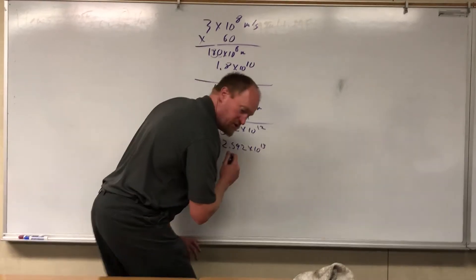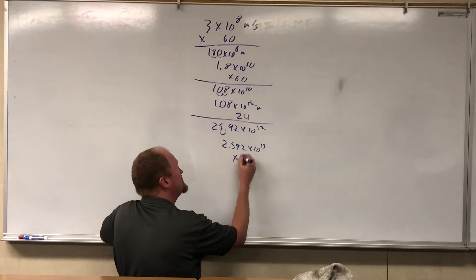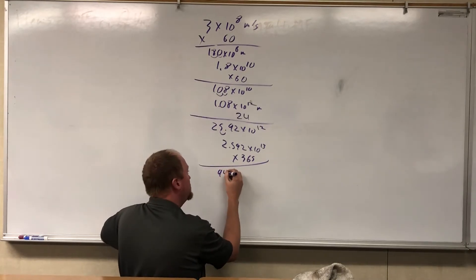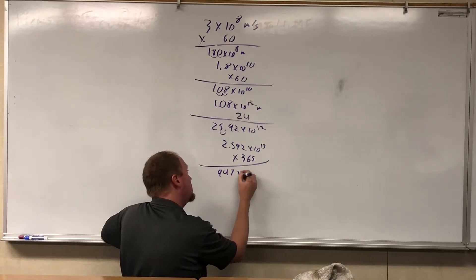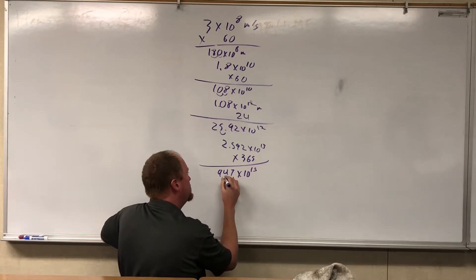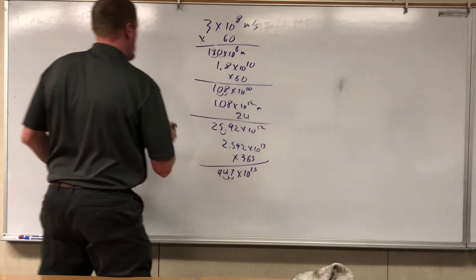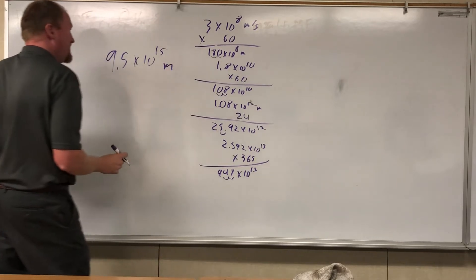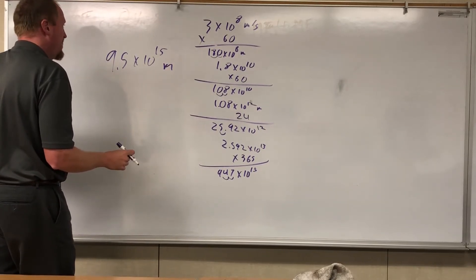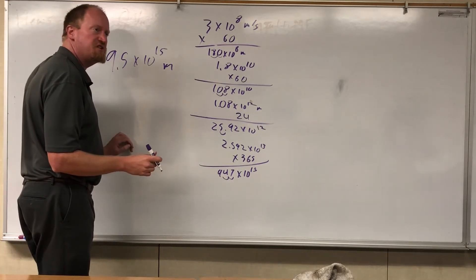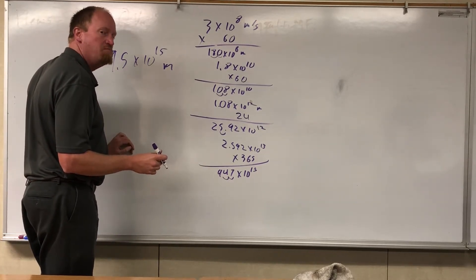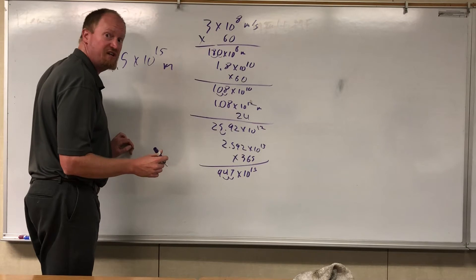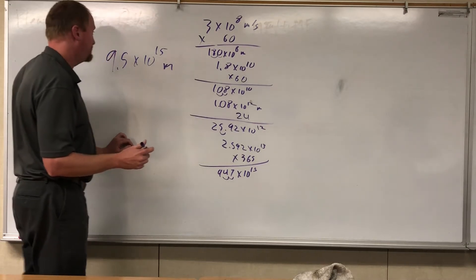But that's not quite to a light year. So multiply by 365, and you get 9.47 times 10 to the 13th — moving the decimal, we round off to 9.5 times 10 to the 15th meters. That is a light year — 9.5 million billion meters, or almost 10 trillion kilometers.